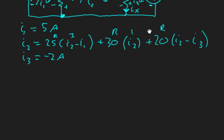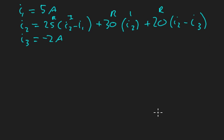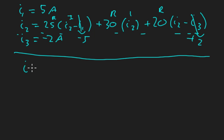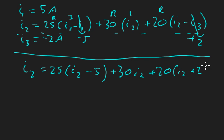Alright, now just focusing on this equation because we need to find all the mesh currents to solve the problem. We know I1 is 5 so that's going to be minus 5, and I3 is negative 2 so negative 2, negative 2 is plus 2, which gives us the equation: 0 equals 25(I2 - 5) plus 30 I2 plus 20(I2 + 2).